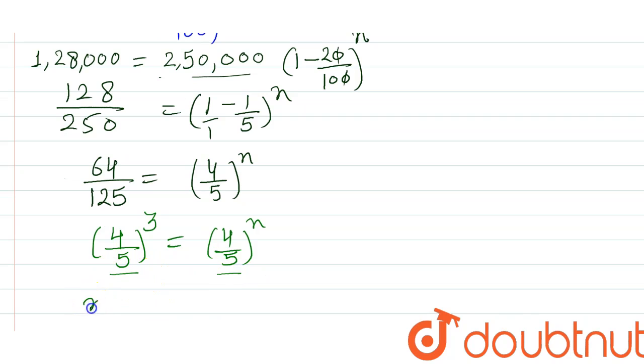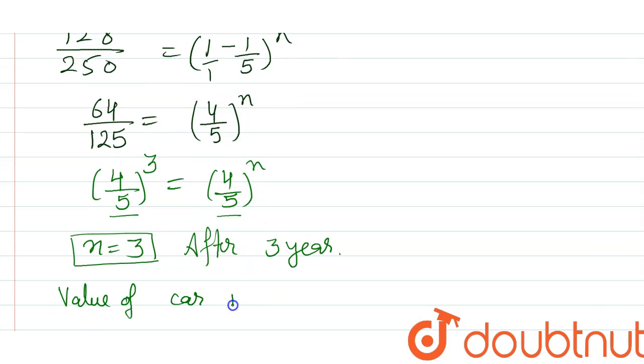Now comparing both sides - as base is same on both sides - powers will also be same. Value of n equals 3. So it means after 3 years, the value of car will remain 1,28,000 rupees.